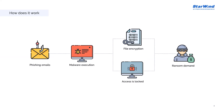At its core, ransomware follows three fundamental stages. Stage one is infection. Ransomware, like any other malware, can gain access to organization systems in a number of ways, but ransomware operators tend to prefer a few specific infection vectors. One is phishing emails — a malicious email may contain a link to a website hosting a malicious download, or an attachment with built-in download functionality. If the email recipient falls for the phish, the ransomware is downloaded and executed on their computer.